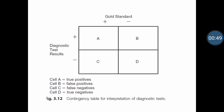To understand these concepts better, here is a table of results of clinical trials. The reliability of a diagnostic test in comparison with a gold standard test is assessed in this table. The table contains four cells: cell A represents true positive, B is false positive, C is false negative, and D is true negative.